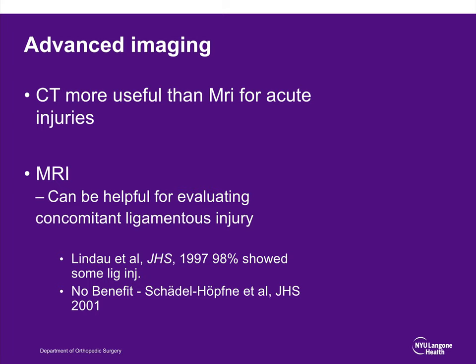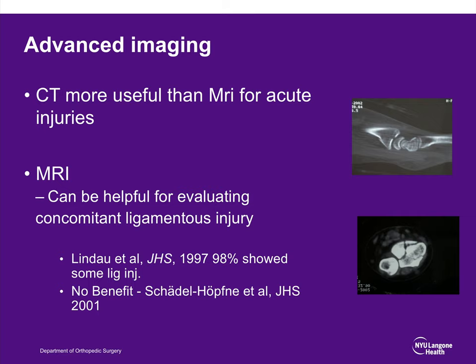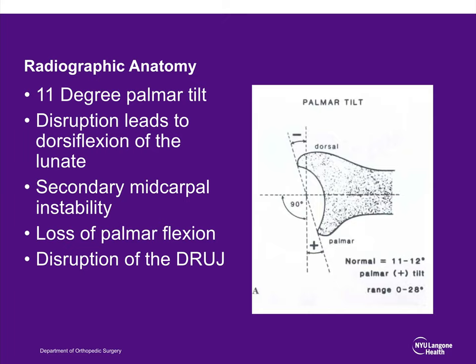Here is an example of a CT scan showing a volar ulnar Barton-type shear fracture and comminution on the axial cuts. Returning to the lateral view, palmar tilt is demonstrated by the normal 11-degree palmar tilt—drawing a line from the dorsal to the volar rim and a line going down parallel to the volar radial cortex. Disruption of the palmar tilt can lead to secondary midcarpal instability and disruption of the DRUJ, which is another indicator of poor outcomes. Remember to restore the palmar tilt.